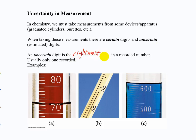So if you take a measurement of 6.21, the 1 is uncertain. If it's 6.210, the 0 is uncertain. So 6.210 is a much more precise measurement than 6.21.